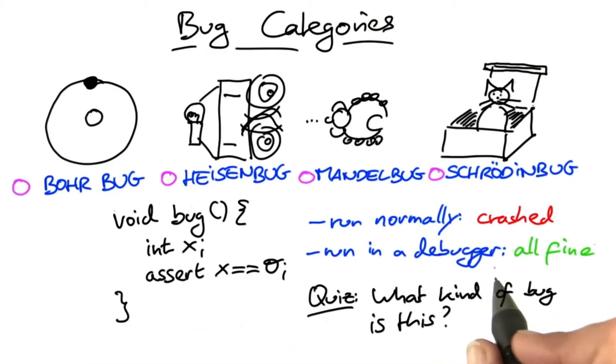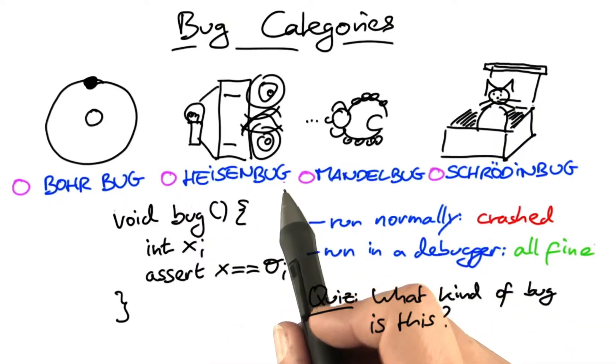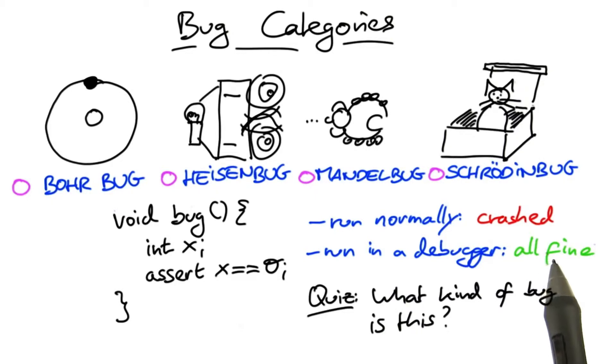Well, if you include a debugger in the conditions, it could be a bore bug. But normally, we don't do that. Heisen bugs change as the program is being observed, and therefore this is a perfect instance of a Heisen bug.